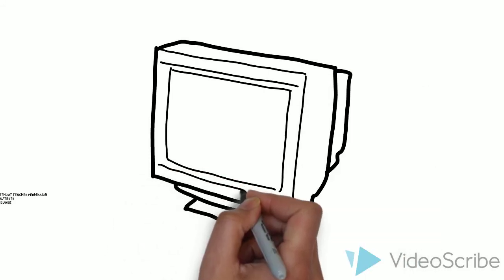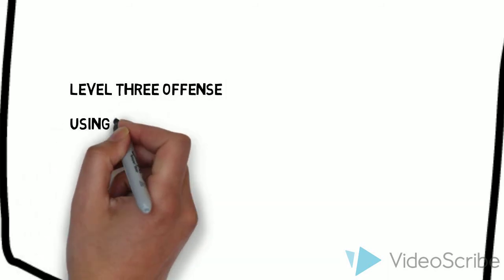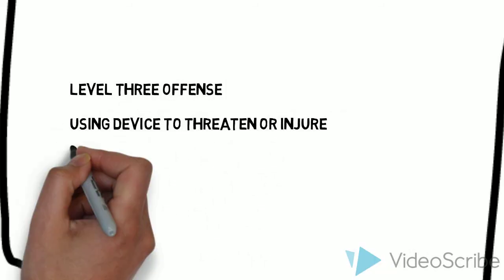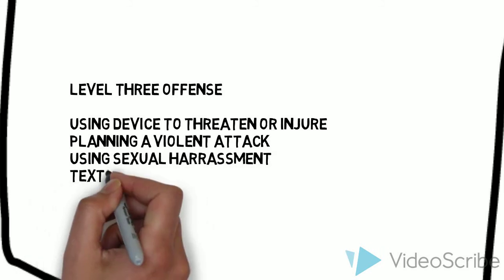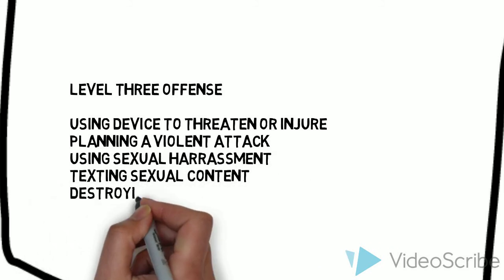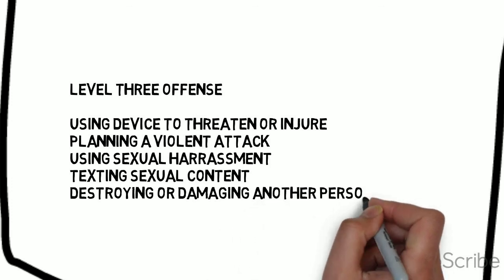The most serious offenses are outlined in our level 3 part of our contract. That would include using the device to threaten or injure, plan a violent attack, use sexual harassment on someone, detect sexual content, or destroy or damage another person's property.